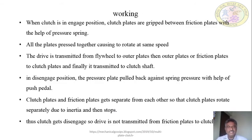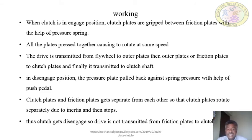Working: Normally the clutch remains in the engaged position. Clutch plates are gripped between the friction plates with the help of pressure plates. All the plates are pressed together causing them to rotate at the same speed. The drive is transmitted from the flywheel to the outer plates, then from the outer plates or friction plates to the clutch assembly, and finally to the clutch shaft. For disengagement, the pressure plate is pulled back against the spring pressure, creating a gap between the plates. No power is transmitted and the clutch is in the disengaged position.